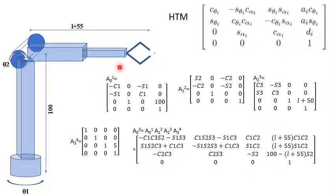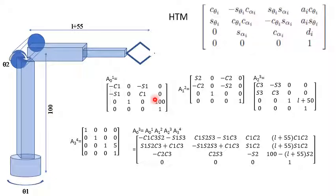For z, it is 100 minus (l + 55) times sin(theta2), because as theta two comes down the z component decreases — this matches our geometric understanding. This confirms our calculation is correct. Please cross-check yourself, and if there is any mistake, send me a message and I will rectify it. Thank you very much. Assalamu alaikum warahmatullahi wabarakatuh.